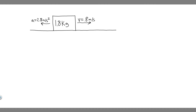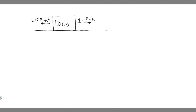They give us this image — we have a block of 1.8 kilograms with a velocity of 0.8 meters per second to the right and an acceleration of 2.8 meters per second squared to the left. That's basically what we're given, so let's go ahead and start with part A.